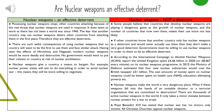Nuclear weapons make the world a very dangerous place. What if these weapons fall into the hands of an unstable dictator or a terrorist organisation committed to destruction? There are thousands of active nuclear weapons in the world today — it only takes one minor mistake between nuclear powers for war to erupt. Pope Benedict XVI of the Roman Catholic Church stated that nuclear war has no victors, only victims. All Christians oppose nuclear weapons.